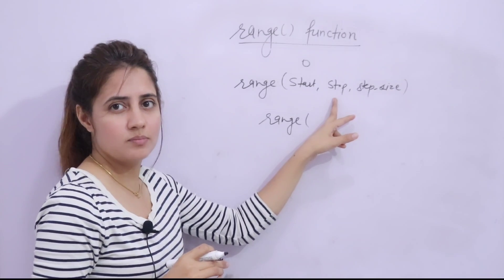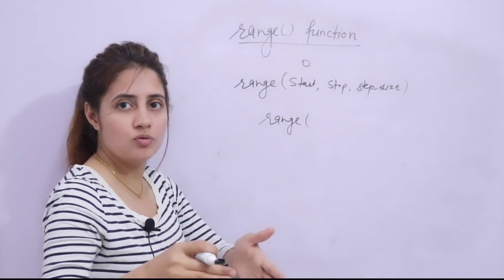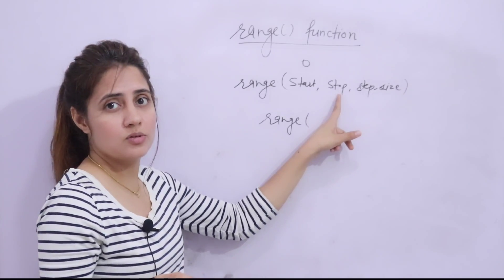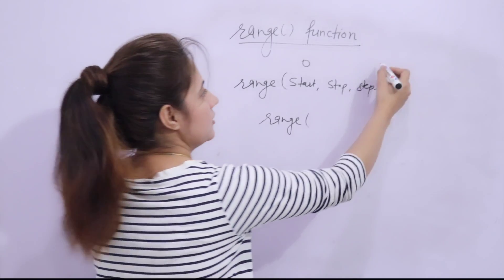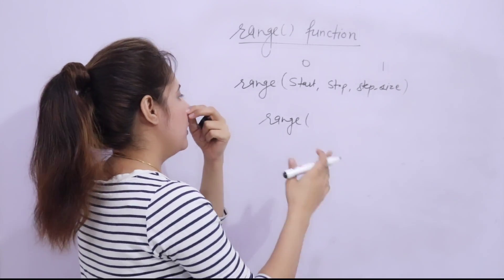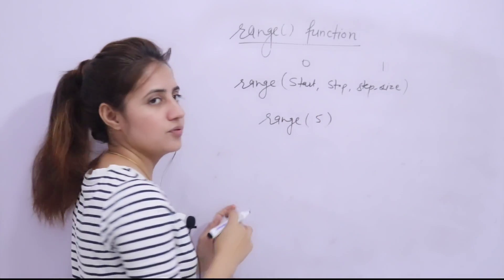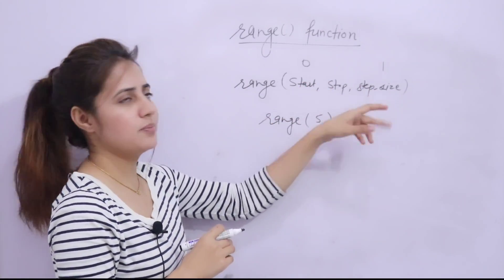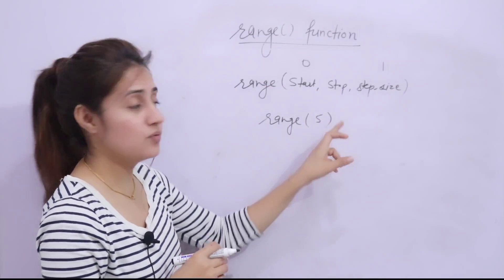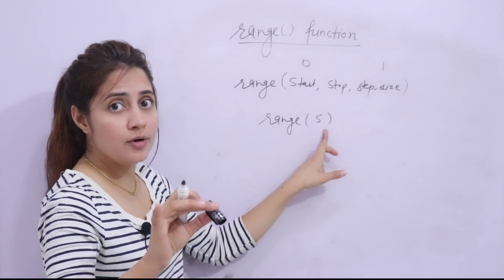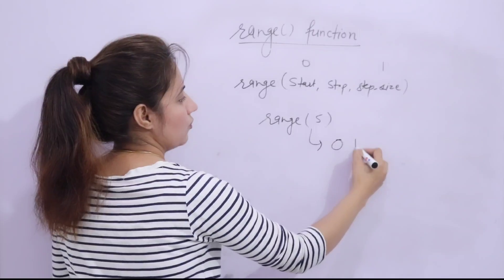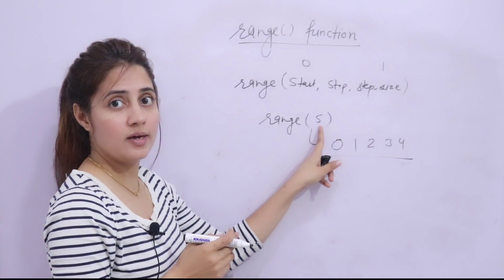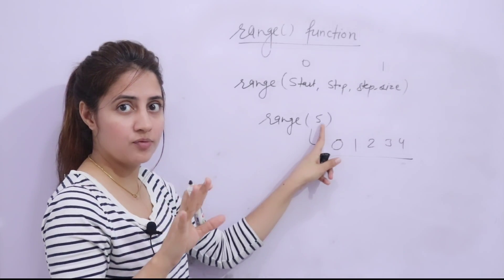If you want to print numbers from 0 to 10, you have to tell the computer where to stop — so stop is mandatory to give. Step size is also optional; by default step size is 1. For example, if I write range(5), we are providing only one argument. By default start is 0 and step size is 1, so this 5 would be the stop. It will produce 0, 1, 2, 3, 4 — not including 5. Whatever you give as stop, it will print till stop minus 1.